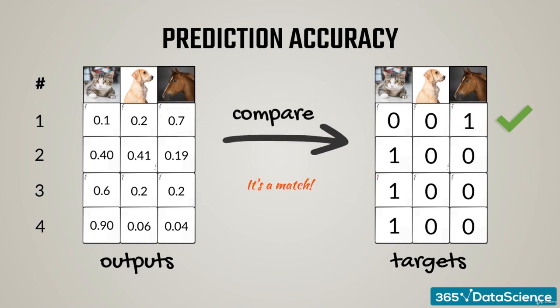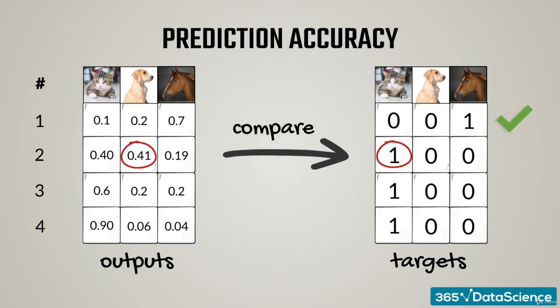The second photo is of a cat, but the model predicted a dog. The output with the highest probability was the dog class. We have a mismatch.